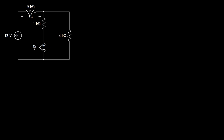Let's look at another example that has a 12-volt voltage source and a dependent voltage source whose voltage equals VA over 2, where VA is the voltage across the 2-kilo-ohm resistor. I'll define the bottom node as ground, and assign voltage V1 relative to ground to the remaining node. There are two ordinary nodes connecting only two elements each, but we won't label those voltages. The voltage VA on which the dependent source depends can be expressed as the voltage drop from the 12-volt point to the V1 point, which is 12 minus V1.